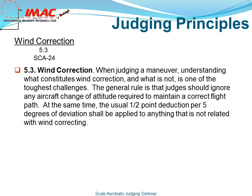Rule 5.3 Wind Correction. When judging a maneuver, understanding what constitutes wind correction and what is not is one of the toughest challenges. The general rule is that judges should ignore any aircraft change of attitude required to maintain a correct flight path. At the same time, the usual half-point deduction per 5 degrees of deviation shall be applied to anything that is not related to wind correcting.